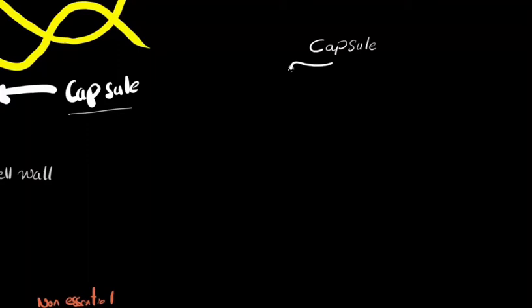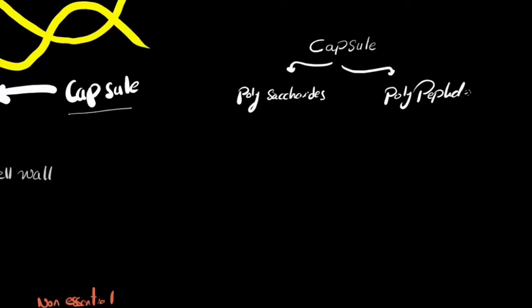The capsule is the outermost layer. It is outer to the cell envelope and is one of the non-essential components of bacterial structure. Some bacteria are capsulated; others may not be.